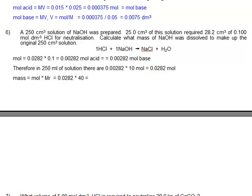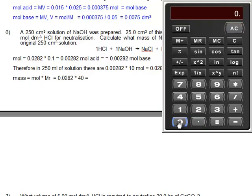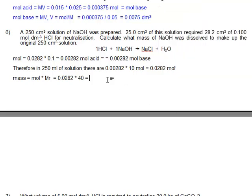So it's 0.0282 times 40. And this is going to give, bring in our calculator. 0.0282 times 40 is 1.128 grams.